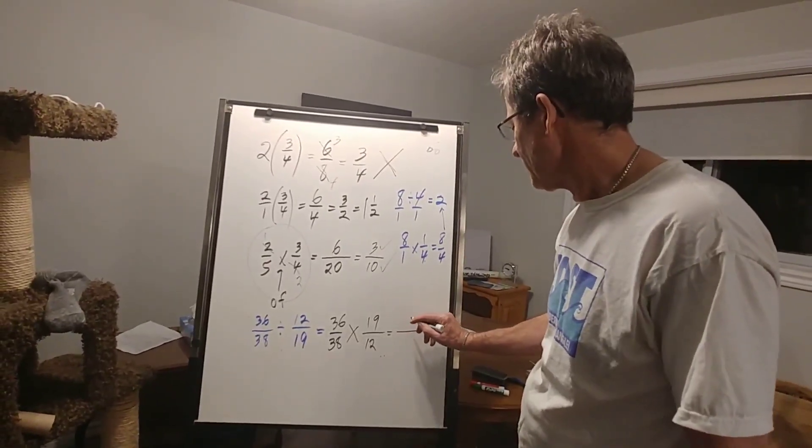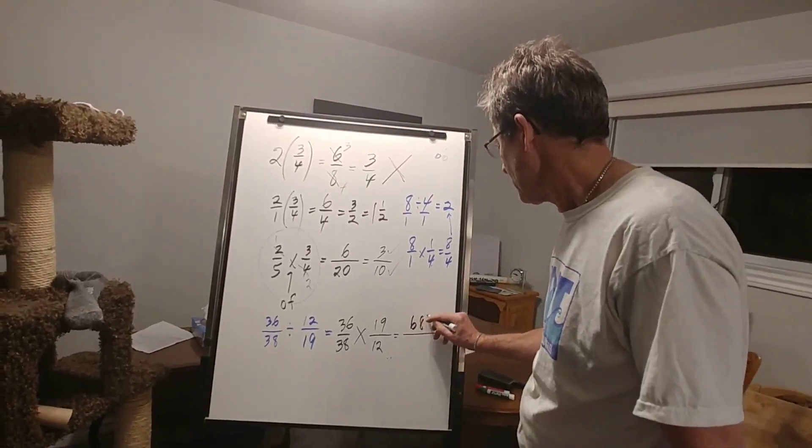Take away 1, 36, you're going to get 684, I believe. And if I multiply 38 times 12, that's like multiplying by 10 and adding 2 more 38.